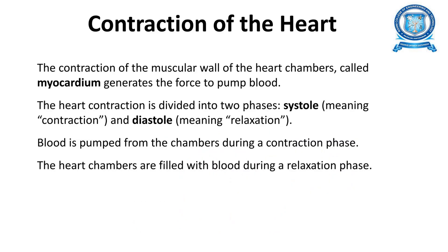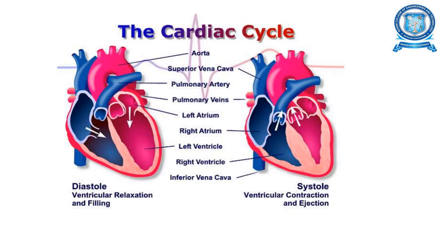Contraction of the heart: the contraction of the muscular walls of the heart chambers involves the myocardium. There are two phases: systole and diastole. Blood is pumped from the chambers during the contraction phase (systole), and the heart chambers are filled with blood during the relaxation phase (diastole). This is the cardiac cycle, as shown in the diagram illustrating ventricular relaxation and filling, and ventricular contraction and ejection.